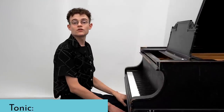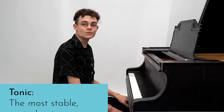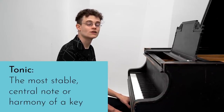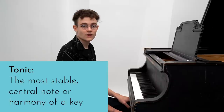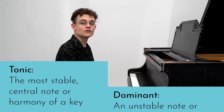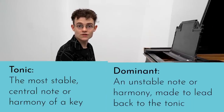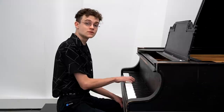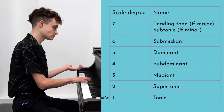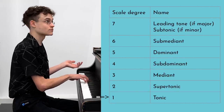First, what do these terms mean? The tonic is the note that feels most stable, the most central to a key. If we say a song is in G minor, then G is the tonic. The dominant, by contrast, is something unstable, something made to lead to the tonic. If you've learned some Western music theory, you might be thinking: those are the names of scale degrees — tonic is the first scale degree, and dominant is the fifth.